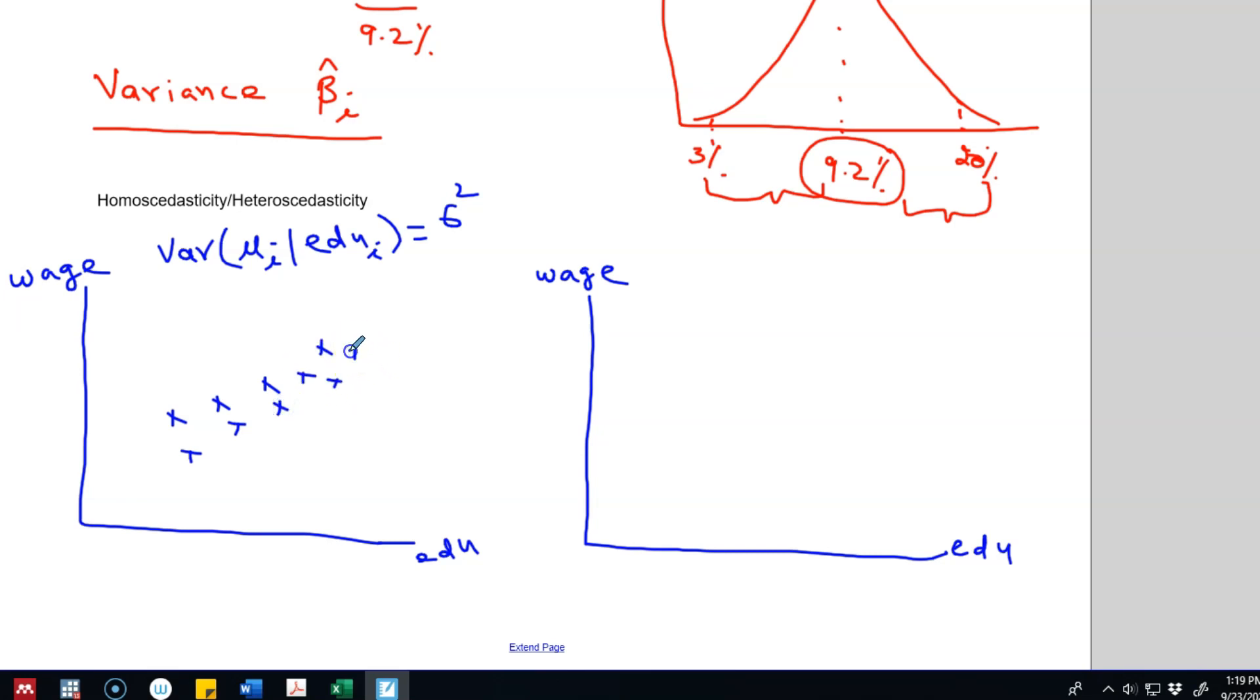We will get a graph like this. This is the OLS estimated line that we will get. As you can see, the average distance between our predicted value and the actual value here is equal to the actual value and the predicted value here. That is, the variance that we will get from here is equal to the variance that we will get here, which means the variance does not depend on the education level.